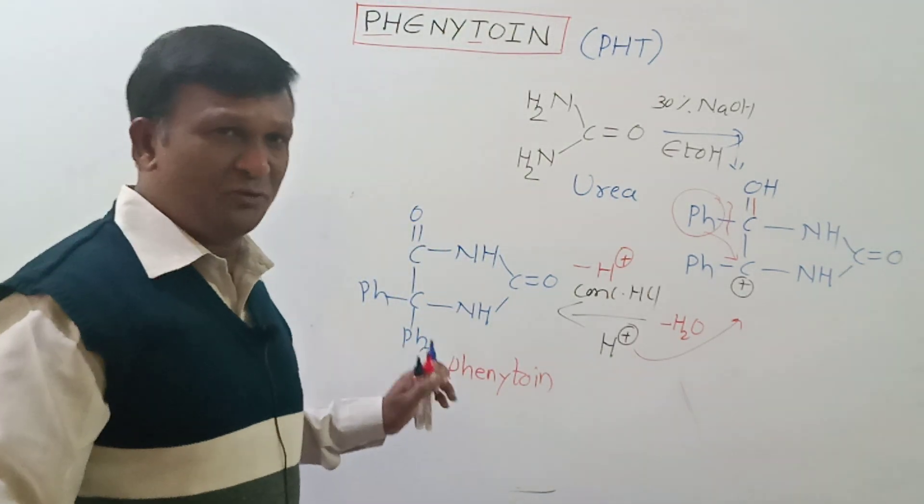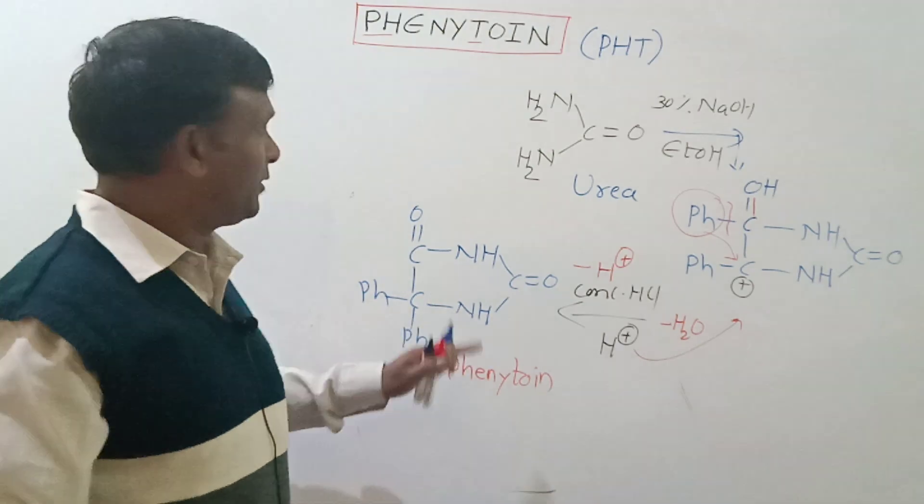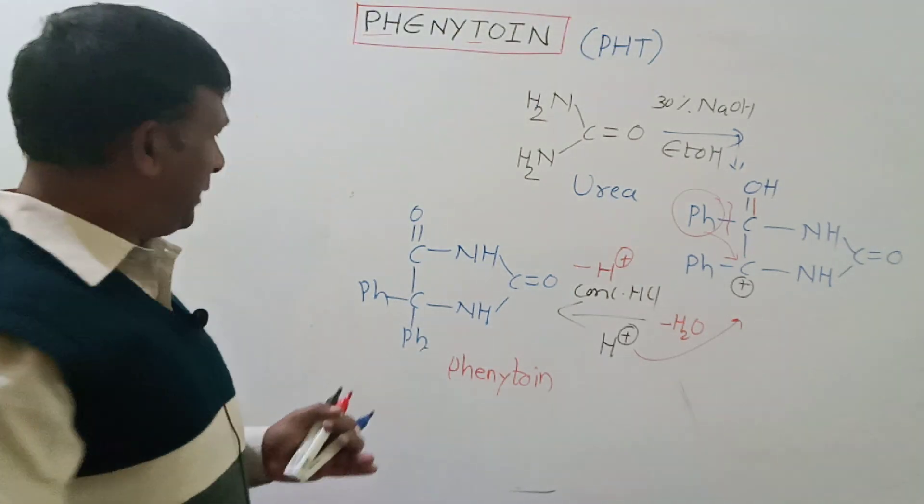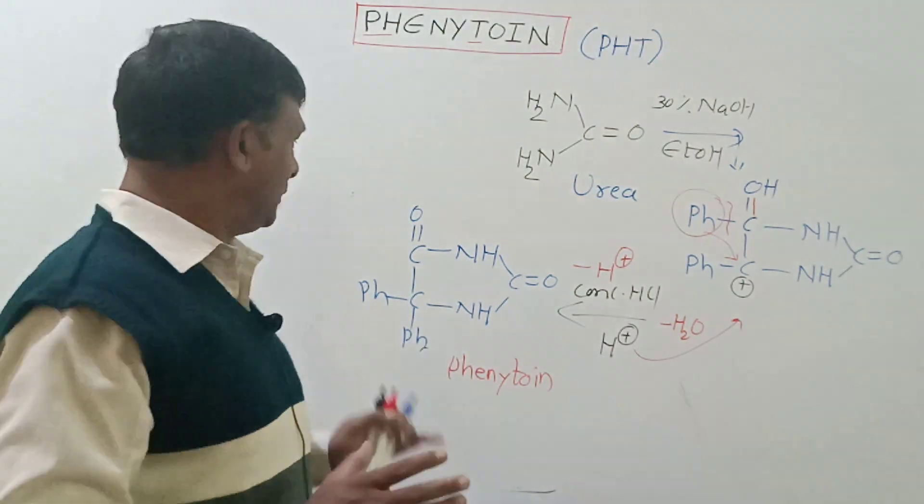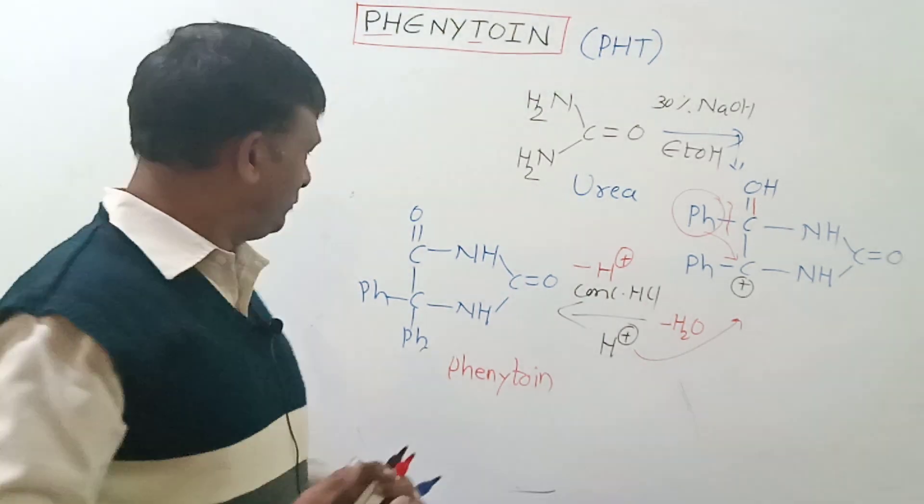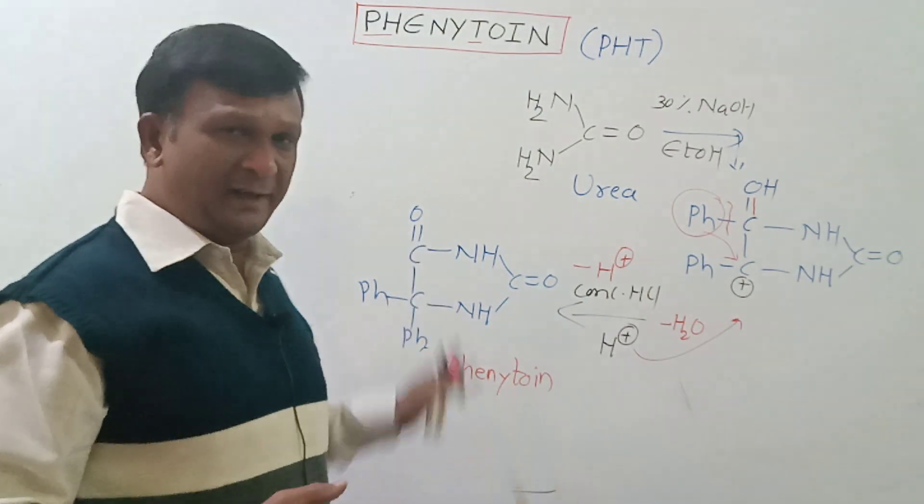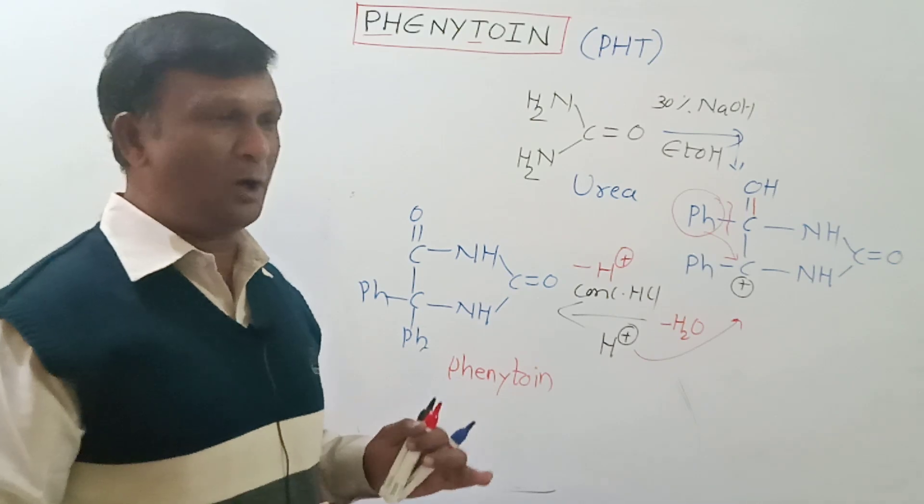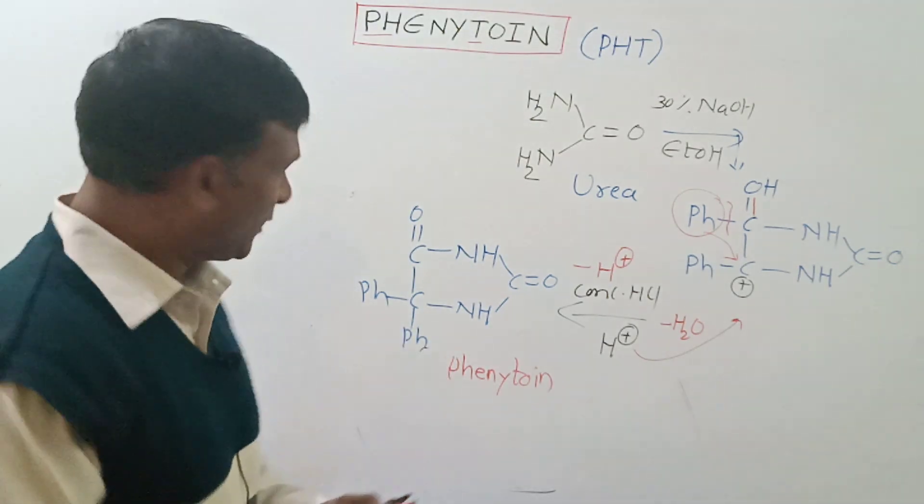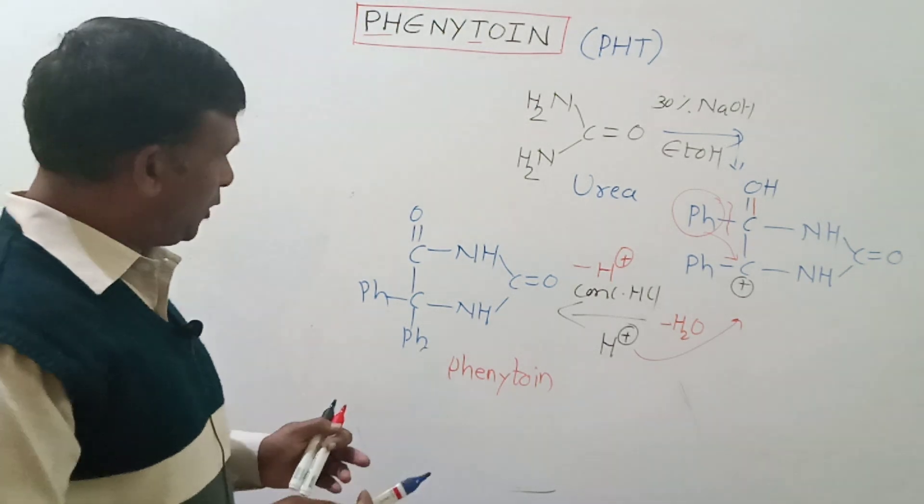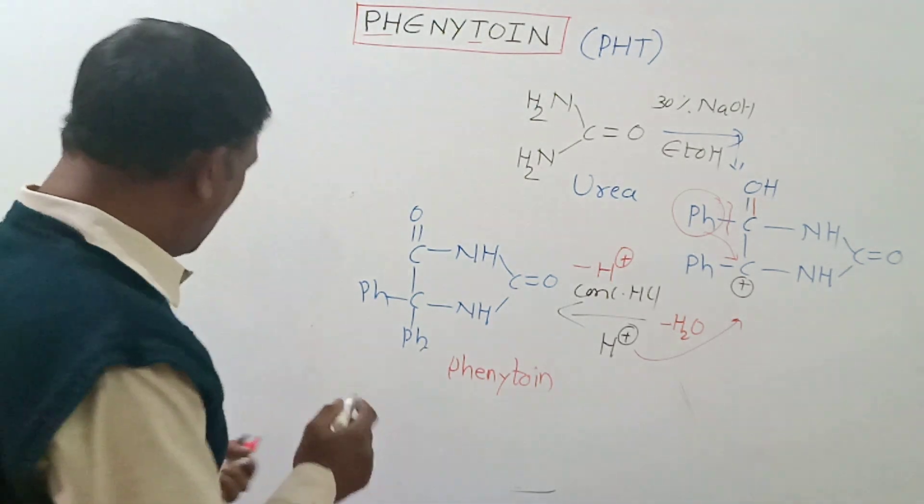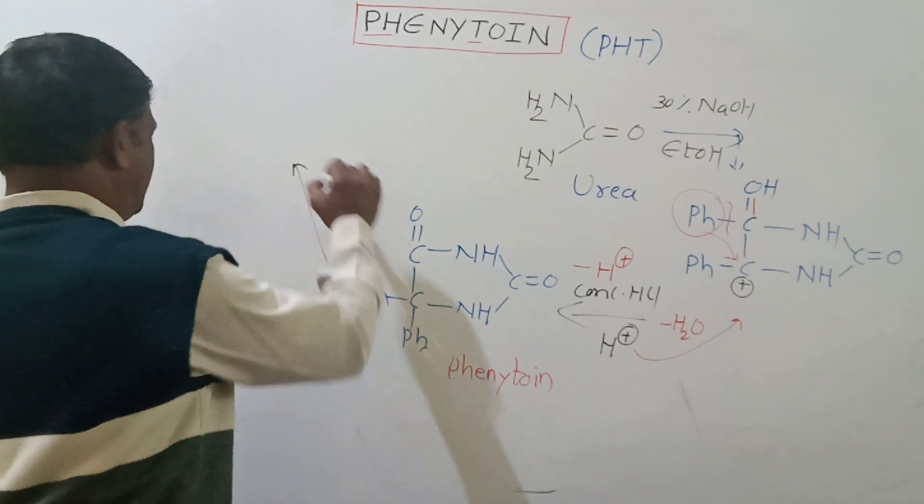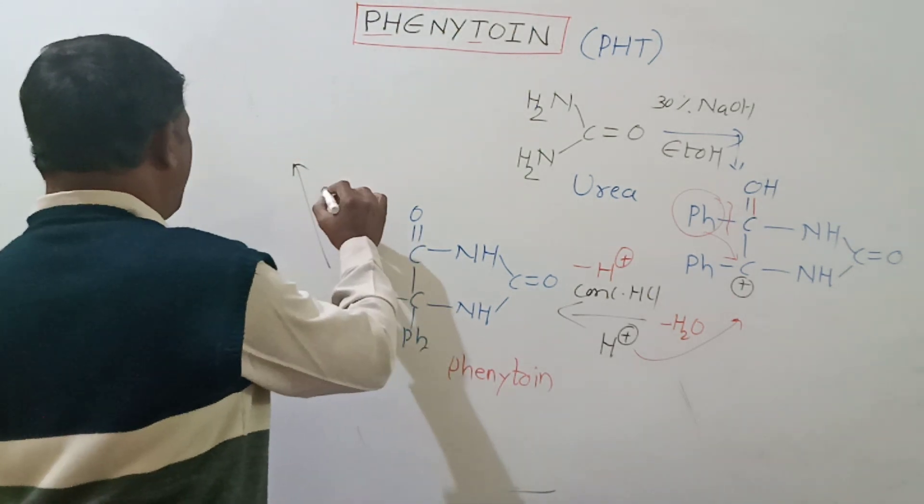Phenytoin can be used as such for treatment in its oral dosage form, but when there is need of its injectable form, the phenytoin gets converted into its salt, which is called phenytoin sodium. For conversion of phenytoin to its salt form, the phenytoin is treated with sodium ethoxide.